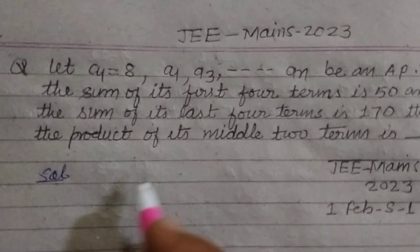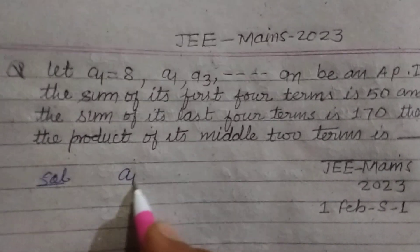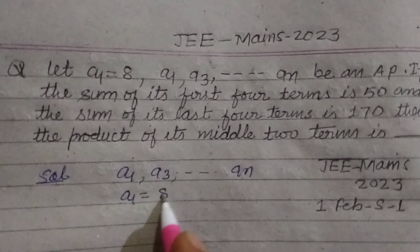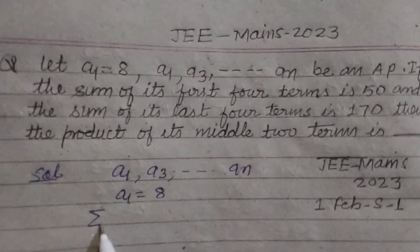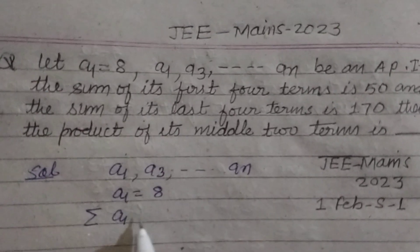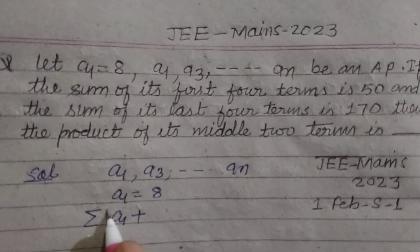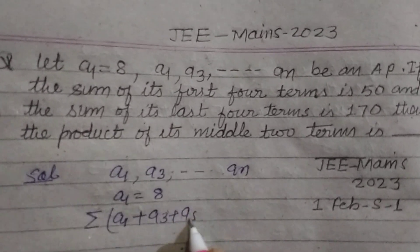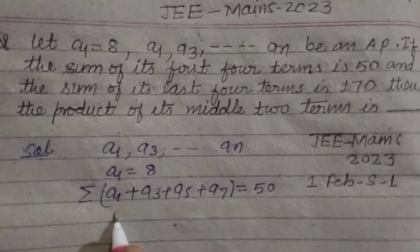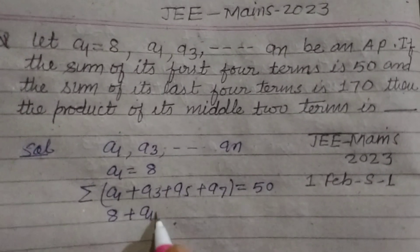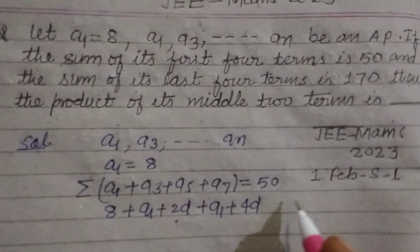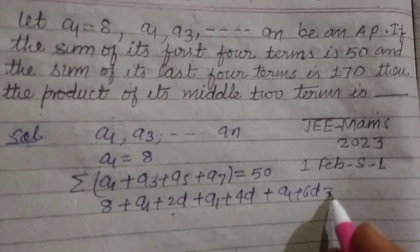Here we have an arithmetic progression A1, A3, and so on up to AN. A1 is given as 8. The sum of its first four terms — A1 + A3 + A5 + A7 — is given as 50. A3 can be written as A1 + 2D, A5 as A1 + 4D, and A7 as A1 + 6D, where D is the common difference. So their sum equals 50.